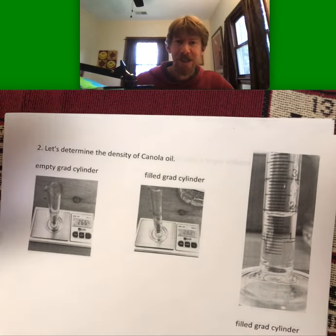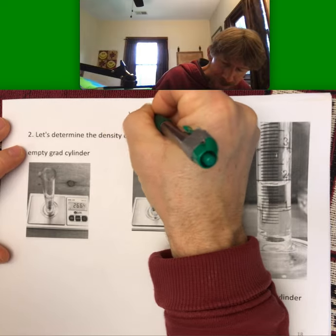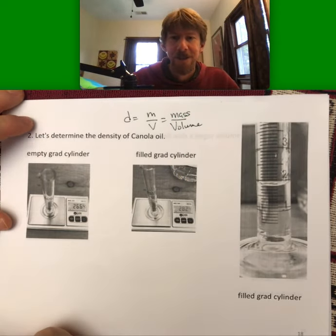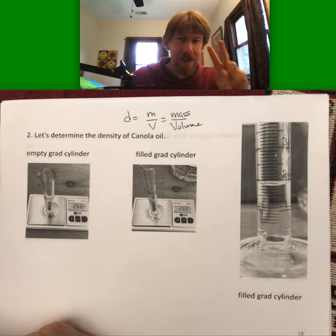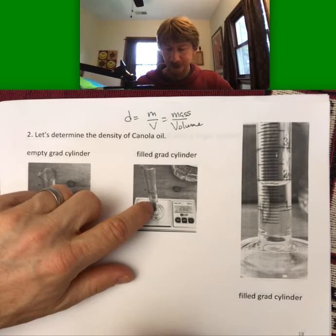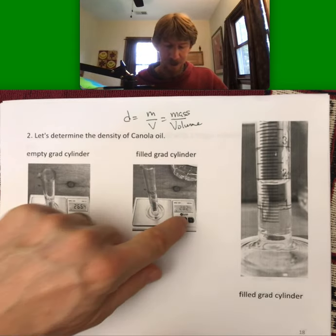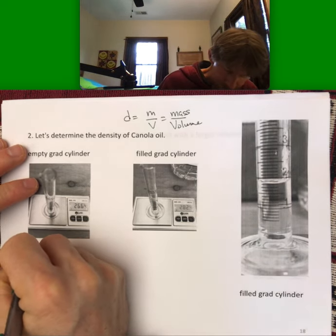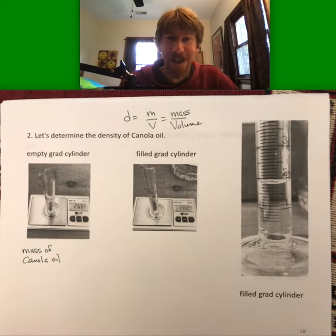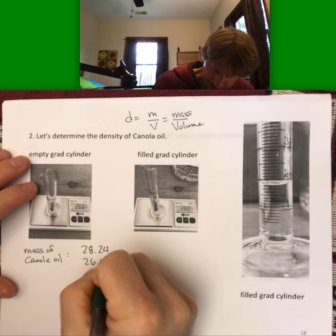Now let's determine the density of canola oil. Density is D equals mass over volume. We're doing this because it allows us to do both addition or subtraction and division. I've got an empty graduated cylinder that weighs 26.64. I fill it up with some canola oil, and now it weighs 28.24 grams. The difference between these two is the mass of my canola oil.